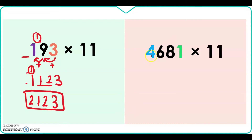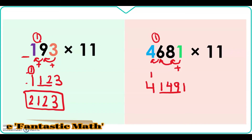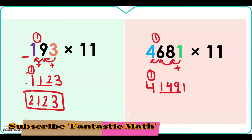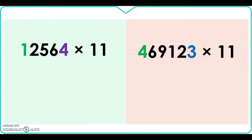Next question: 4681 times 11. Write the first digit and last digit as they are with a space between them. Adding from right: 1 plus 8 is 9; then 8 plus 6 is 14, write 4 and carry 1; then 6 plus 4 is 10 plus carry 1 is 11, write 1 and carry 1. The last carry goes to the first digit: 4 plus 1 is 5. Our answer is 51491.